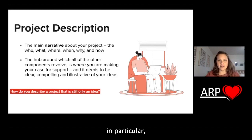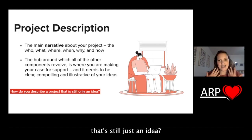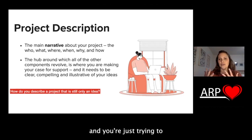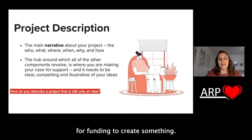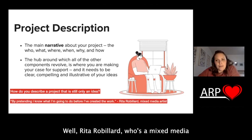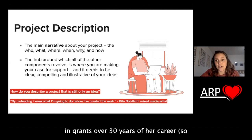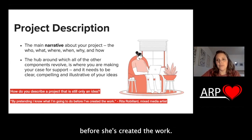A thing that often comes up when I'm talking with artists — whether I'm reading their project description and asking for more detail, or they're just starting the brainstorming process — is the question: how do you describe a project that's still just an idea? I'm trying to get funding so that I can create it — sometimes you haven't made it yet. Rita Robillard, a mixed media artist who has won about $75,000 in grants over 30 years, said that she describes a project that's just an idea by pretending she knows what she's going to do before she's created the work.